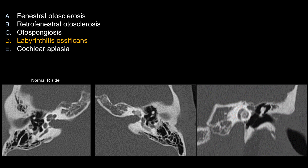For cochlear aplasia, sometimes the cochlea would not develop, so you see the entire thing is wiped out. Here you can still see the cochlea — it is formed but abnormally dense inside — so this is not cochlear aplasia. Another way to tell the difference between cochlear aplasia and severe labyrinthitis ossificans is that you should see formation of the cochlear promontory in labyrinthitis ossificans, whereas in cochlear aplasia you often don't see a properly formed cochlear promontory.